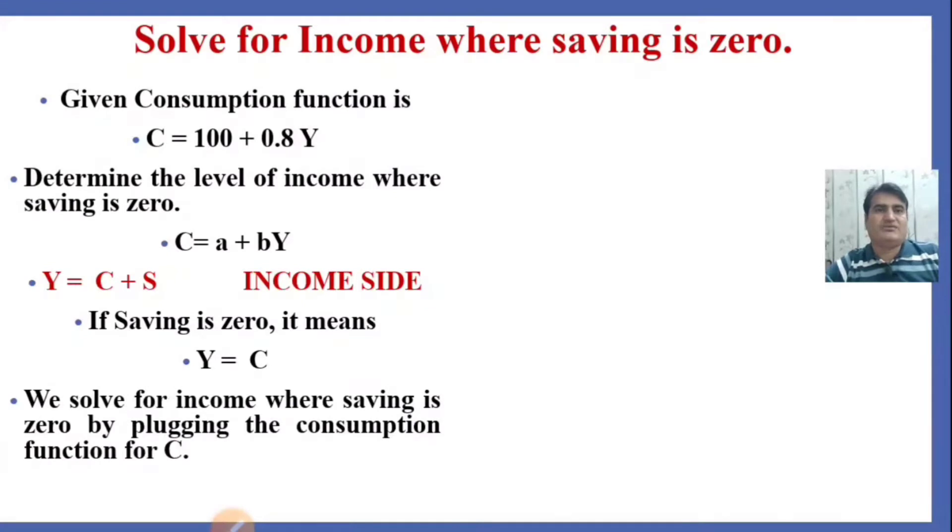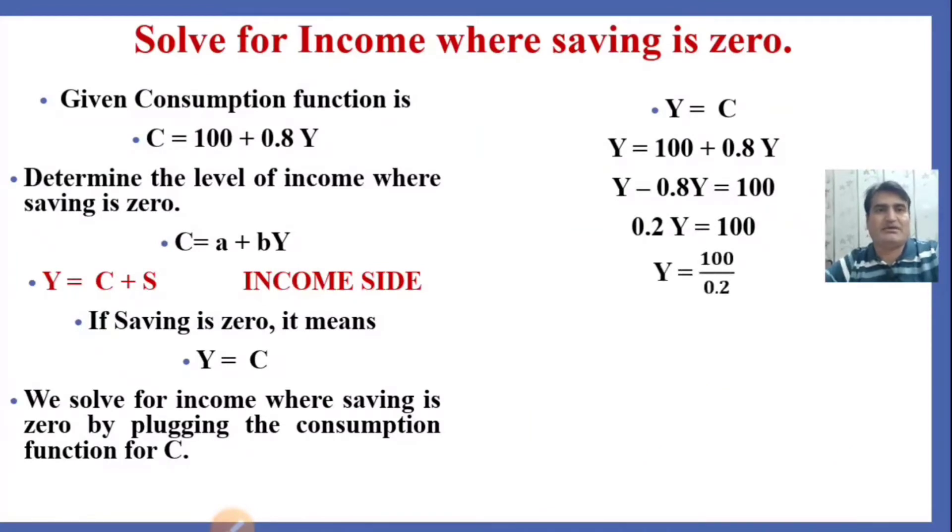We solve for income where saving is zero by plugging the consumption function for C. When income is equal to consumption, we substitute the consumption function for C. After solving it, the income equals 500.